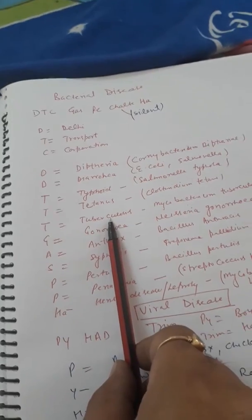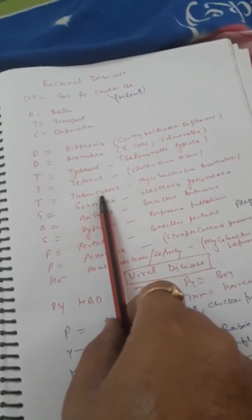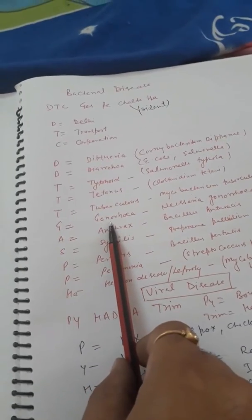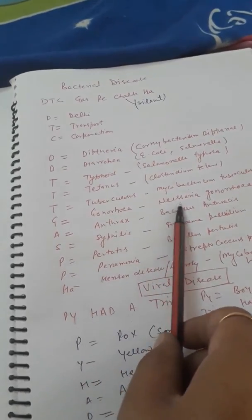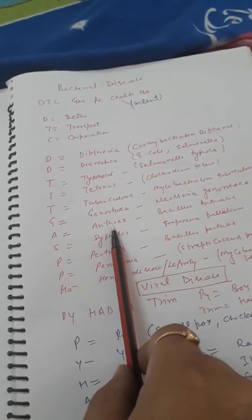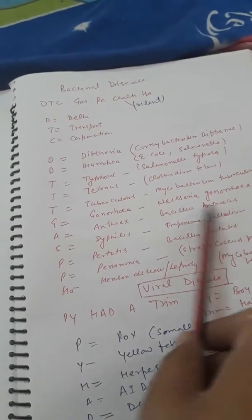G se aapka Gonorrhea. Gonorrhea joh karta hai Neisseria gonorrhoeae. A se aapka Anthrax. Anthrax joh cause karta hai Bacillus anthracis cause karta hai.